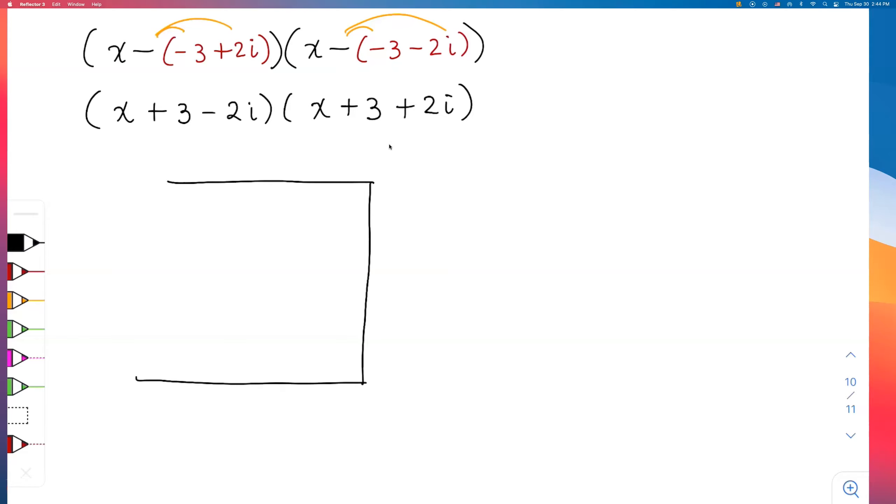If I do my 3 by 3 box—and if you want to do a different method, that's okay too, you can get the same answer—I have my x, 3, and -2i here. I have my x, 3, positive 2i here. Let me go ahead and multiply and find out nine different answers here: x², 3x, -2ix.